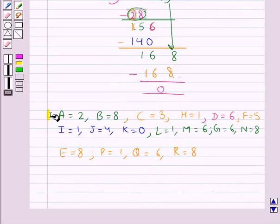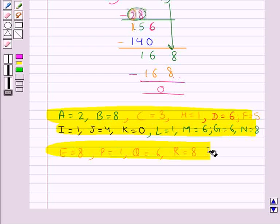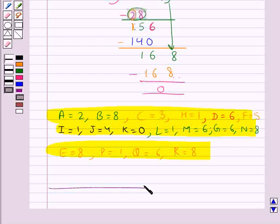So we have found the value for all the English alphabets used in this process of division. So this completes the session. Hope you have understood the solution for this question.